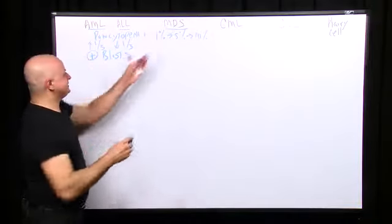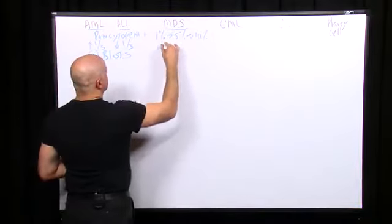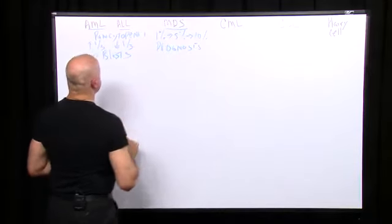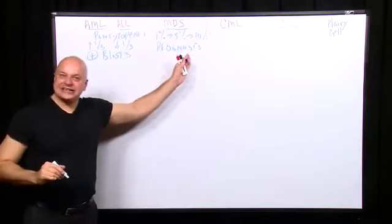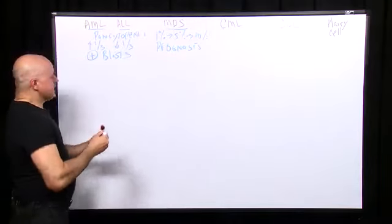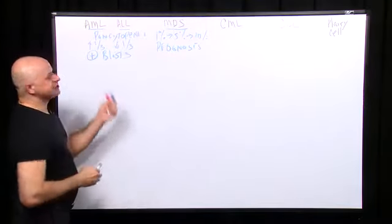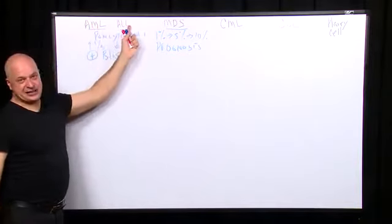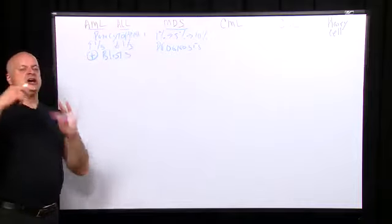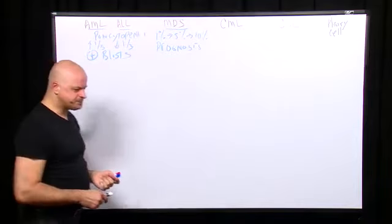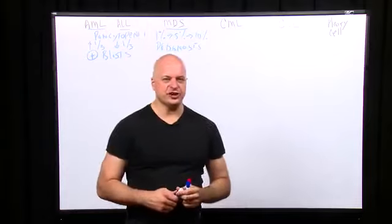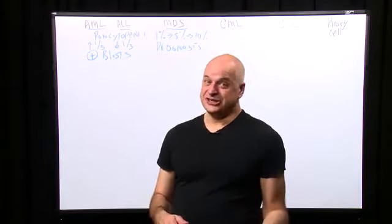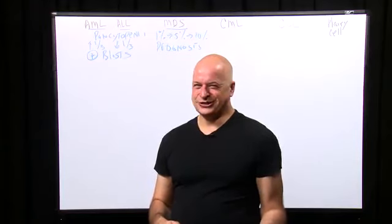The percentage of blasts is the greatest measure of prognosis — how likely are you to die? Acute myeloid leukemia is more common in older adults, and ALL is more common in children. You don't have to know that much about the different subtypes of leukemia. There are eight separate subtypes just of acute myeloid leukemia.